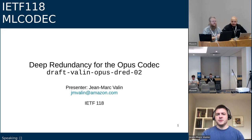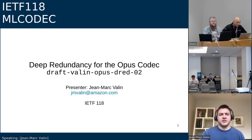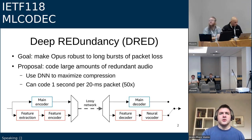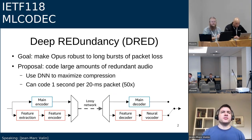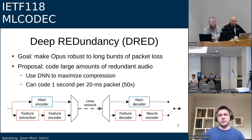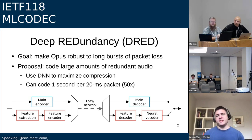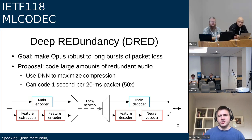I'm Jean-Marc and I'll be presenting an update of the Deep Redundancy for the Opus codec draft. This is a bit of a recap of last time because we sort of ran out of time. Essentially, what we're trying to achieve is to make Opus robust to long bursts of packet loss, using highly compressed redundant audio. We use machine learning to achieve that. For testing, we've been working with coding one second of redundancy in every 20 millisecond packet, which comes out to a redundancy factor of 50x.